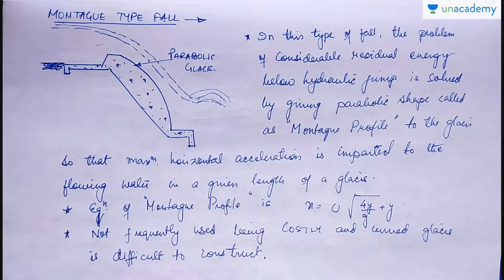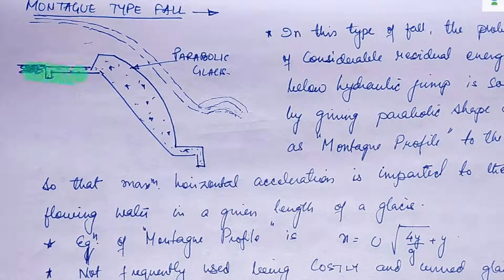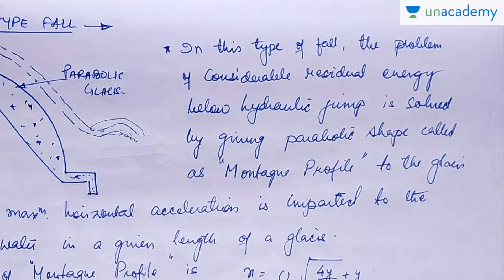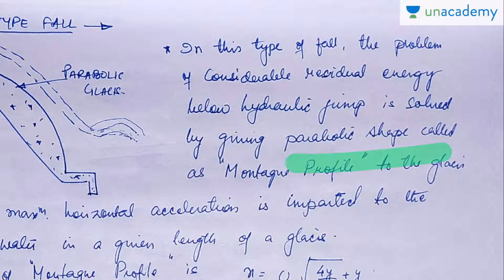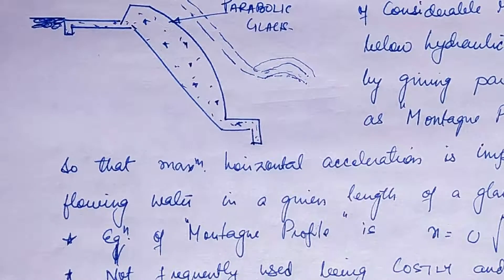One more type is the mountain type fall. The difference here is that there is a raised crest and then it takes a parabolic path. In this type of fall, the problem of considerable residual energy below the hydraulic jump is solved by giving the glacis a parabolic shape, also called the mountain type profile.